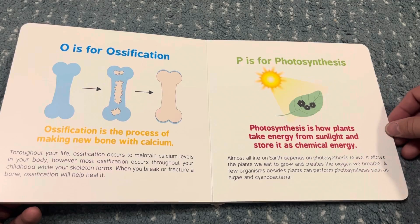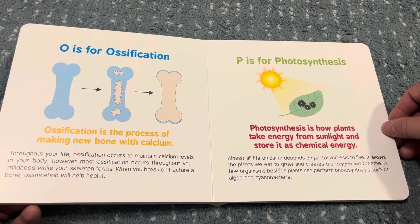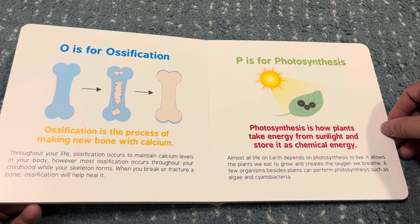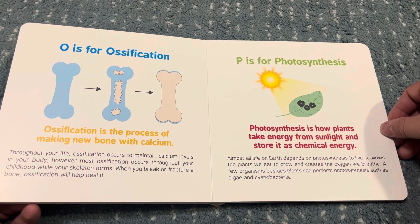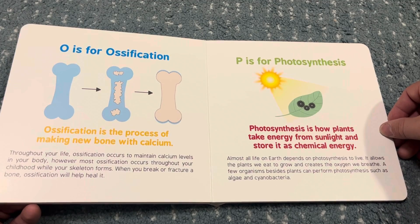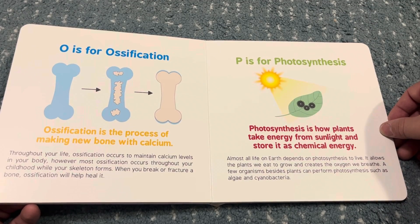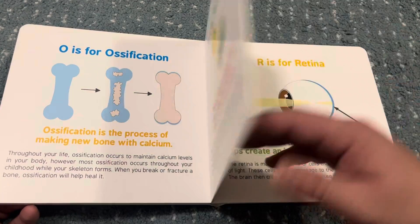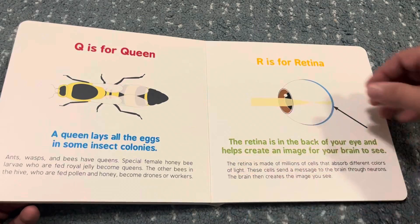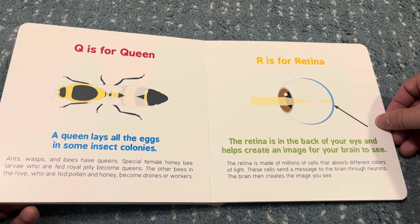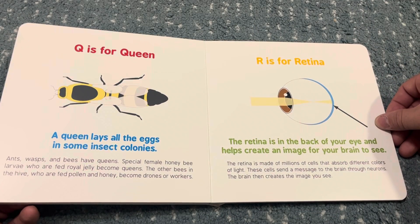O is for ossification. Ossification is the process of making new bone with calcium. P is for photosynthesis. Photosynthesis is how plants take energy from sunlight and store it as chemical energy. Q is for queen. A queen lays all the eggs in some insect colonies.